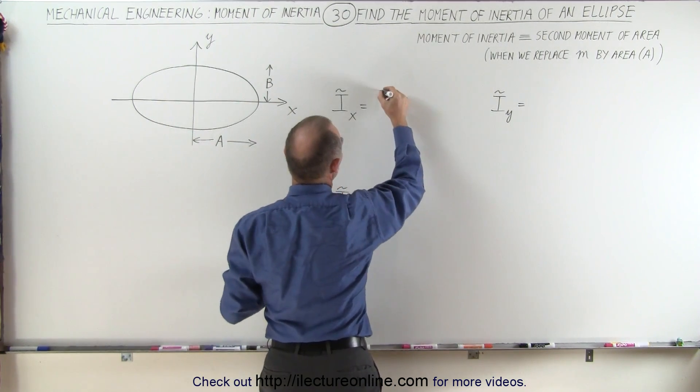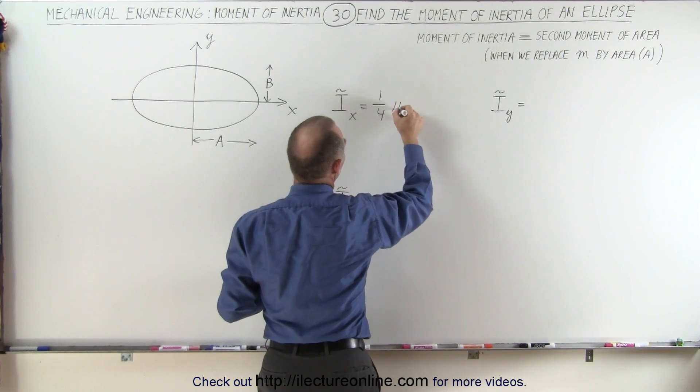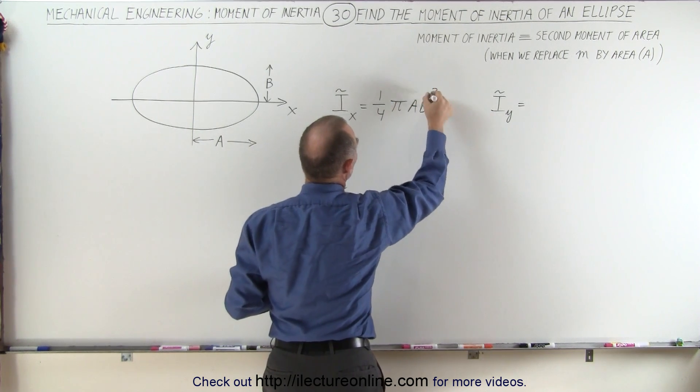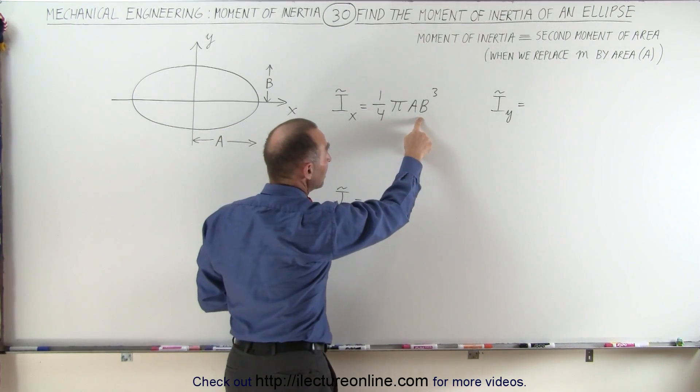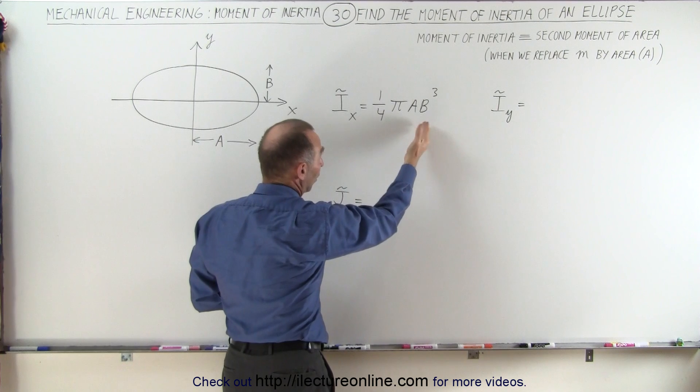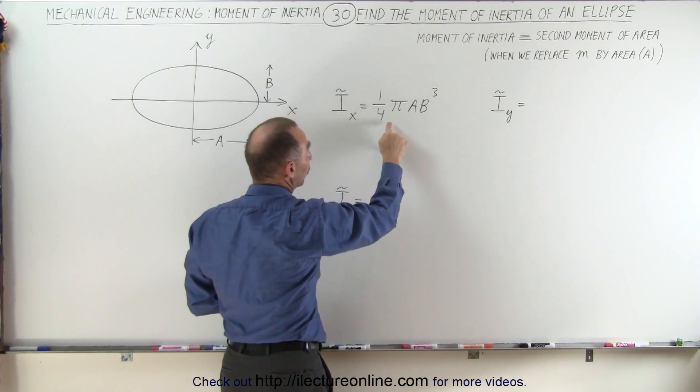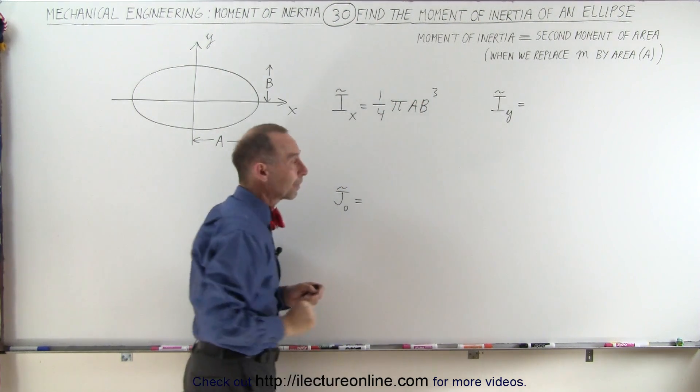We then get the equation to be one-quarter pi a b cubed. And then notice that if a becomes equal to b, equal to r, if it's a circle, then we get one-quarter pi r to the fourth. So that seems to work.